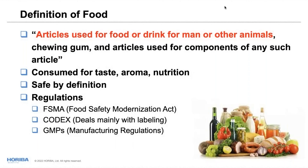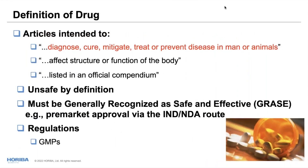Codex, part of the USP, deals mainly with labeling of foods, and we have the GMPs — Good Manufacturing Practices. Moving to the definition of a drug: articles intended to cure, diagnose, mitigate, treat, or prevent disease in man or animals. They affect the structure or function of the body and are listed in the official compendium — the US Pharmacopeia — with monographs for each drug containing multiple tests to ensure quality. Drugs are generally deemed unsafe by definition until the manufacturer completes all necessary research.